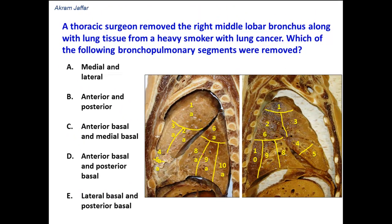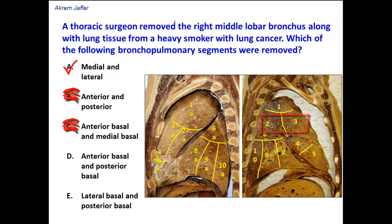So, returning to the question — which bronchopulmonary segments were removed when the surgeon removed the right middle lobe bronchus? The right middle lobe bronchus supplies the segments of the middle lobe of the right lung, which are medial and lateral. Medial and lateral is the correct answer. Anterior and posterior is wrong because those are segments of the upper lobe, not the middle lobe. Anterior basal and medial basal are segments of the lower lobe.